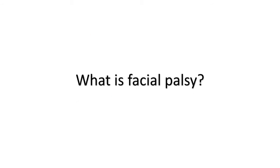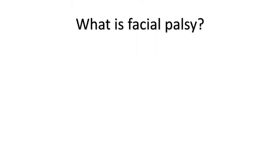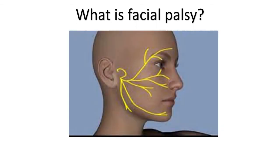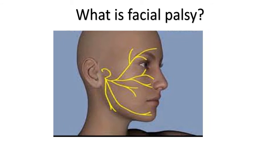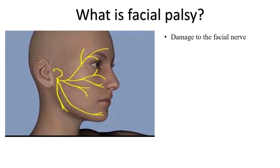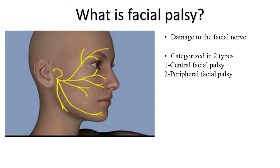So now let's understand what is facial palsy. Facial palsy is caused by damage to the facial nerve, i.e. cranial nerve 7, that supplies the muscles of the face. It can be categorized into two types based on the location of the causal pathology: central facial palsy and peripheral facial palsy.